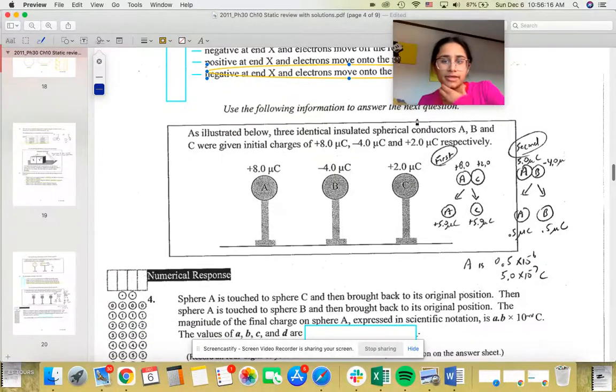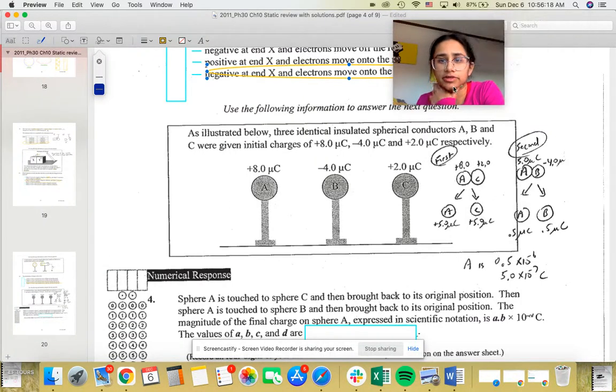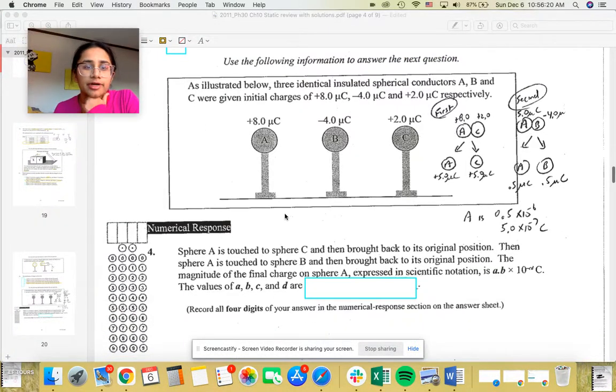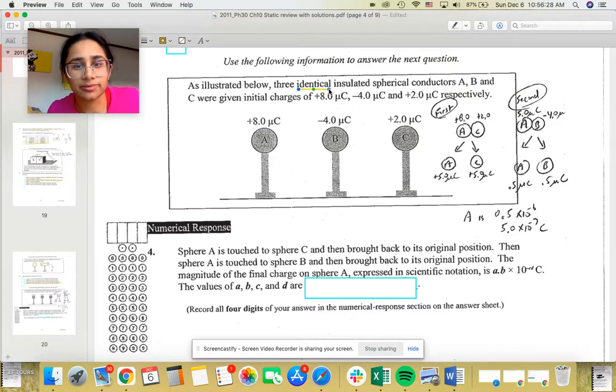Okay, now for this question. So this question here requires a little bit of math. It's basically saying that three identical, and identical means that when we touch each sphere, each one will have the same charge on it to try and balance each other up. So three identical insulated spherical conductors, right now they're all having their own charges in microcoulombs. A, B, and C are given initial charges of this, this, and this respectively.